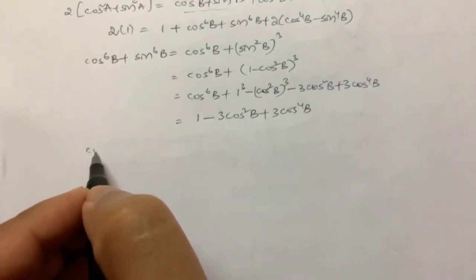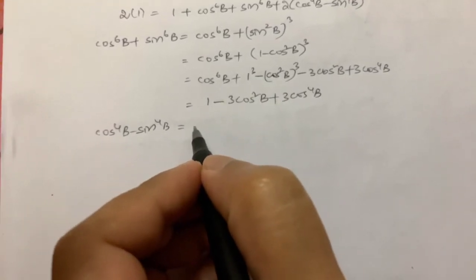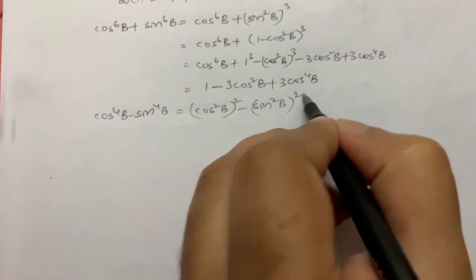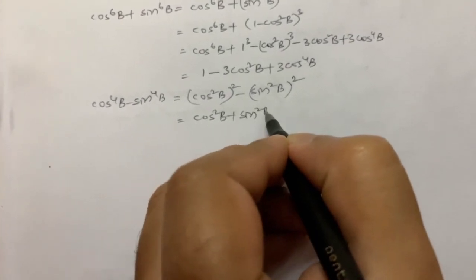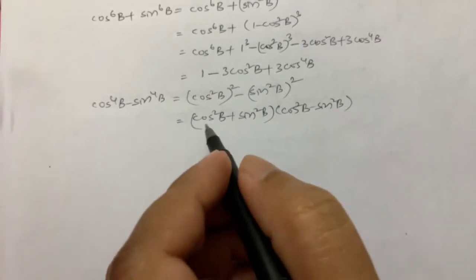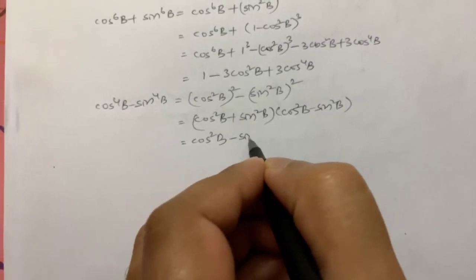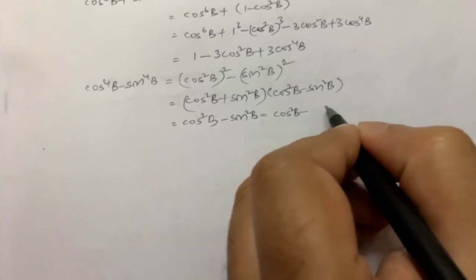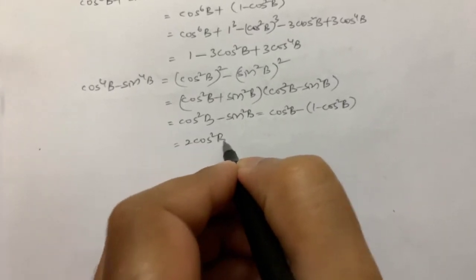Next, for cos⁴ B - sin⁴ B: we write it as (cos² B)² - (sin² B)² = (cos² B + sin² B)(cos² B - sin² B) = 1 · (cos² B - sin² B). Writing sin² B as 1 - cos² B, this becomes cos² B - (1 - cos² B) = 2 cos² B - 1.